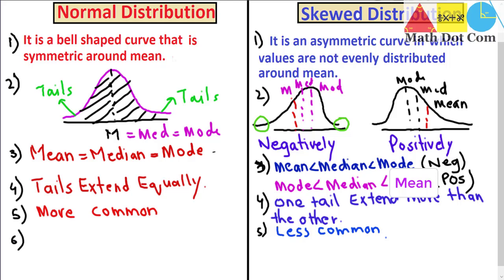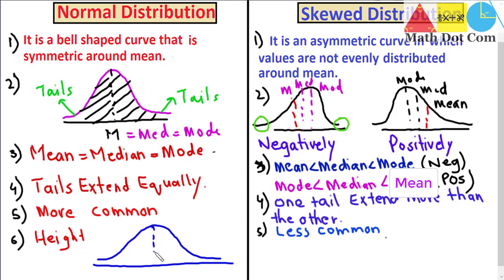For examples, normal distribution includes height. If we draw a normal distribution curve for women's height, there are more women having average height as compared to women having very short or very tall height. More data tends to be around the mean, and it decreases as we move away from the mean in either direction — towards short or tall. So height follows a normal distribution.